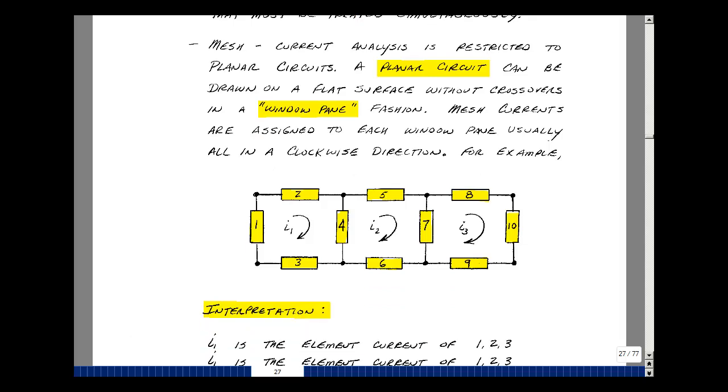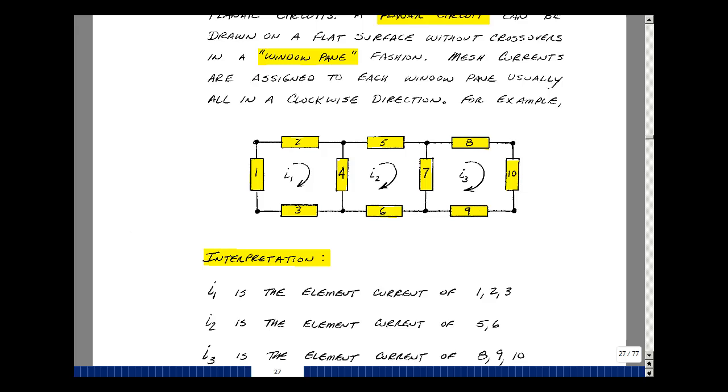Now let's take a look at how we might interpret these currents. The mesh current I1 is flowing in element 3, element 1, and element 2. Mesh current 2 is flowing in element 5 and element 6, and mesh current 3 is flowing in element 8, 10, and 9. Now element 4 has a combination of I1 and I2. Element 7 has a combination of 2 and 3.